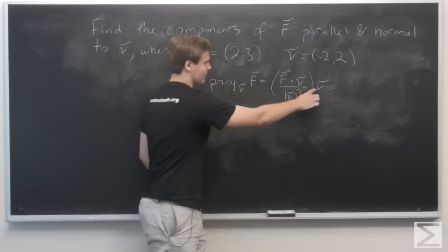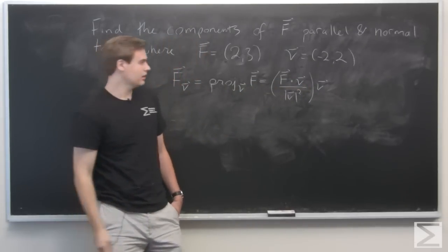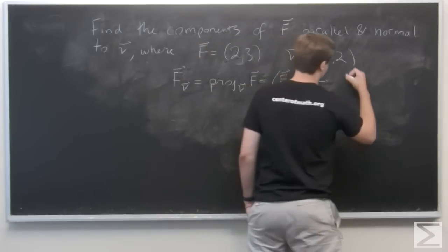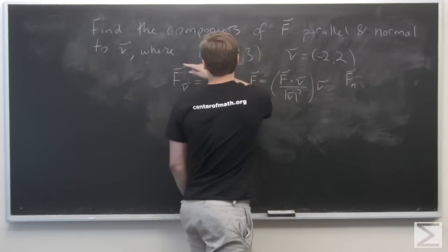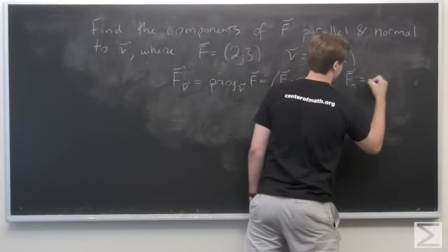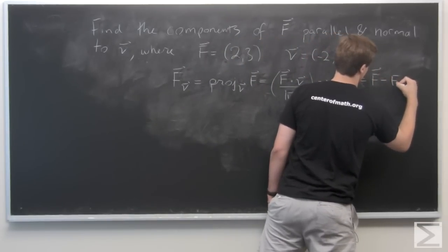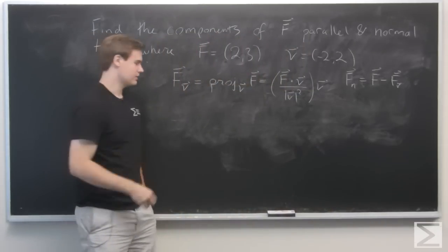You don't have to worry, this is not a dot product here. This is a scalar. So this is just scalar multiplication of the vector v. And we have the formula that the normal component of f with respect to v is f minus the parallel component.